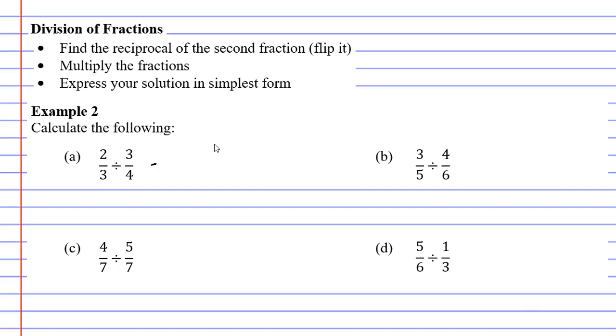When you do it, you keep the first fraction the same. Our first fraction in question A was 2 over 3, or 2 thirds. And you will notice with the first dot point, it says find the reciprocal of the second fraction, or flip it. So our second fraction was 3 over 4. Its reciprocal is 4 over 3. We just flipped the fraction.